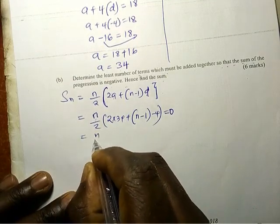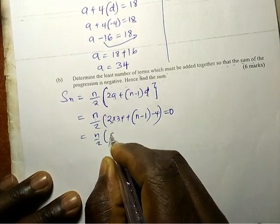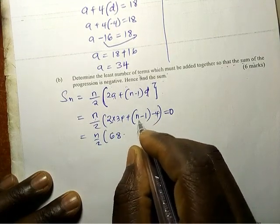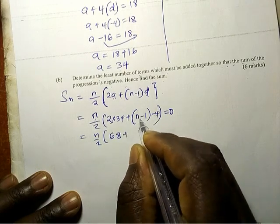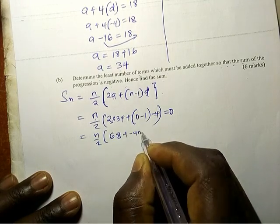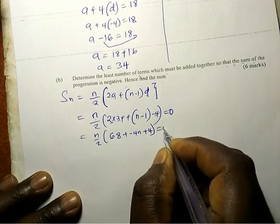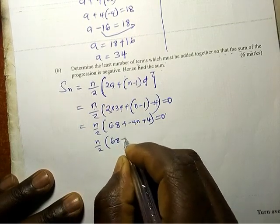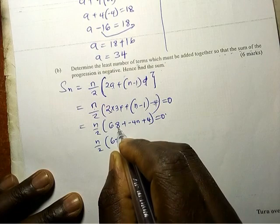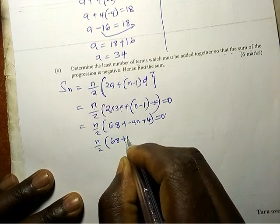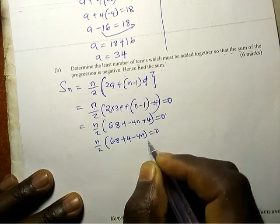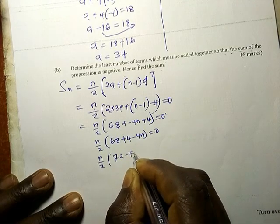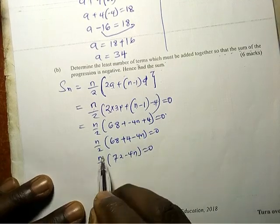That means that n over 2 into this is 68. So let us open this one. So plus this time this is going to be negative 4n plus 4, equal to less than 0. So n over 2 into 68, minus, so this one we are going to add, plus 4 minus 4n, less than or equal to 0. So n over 2 into 72 minus 4n equal to 0. So let us remove this n down here. I will multiply by the reciprocal of this.